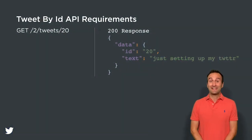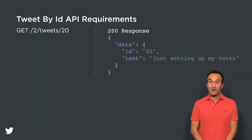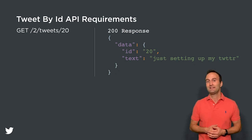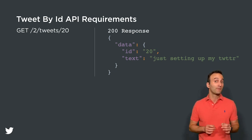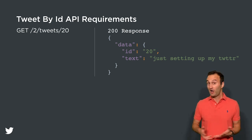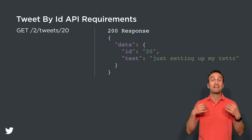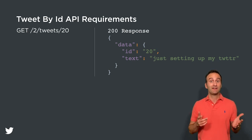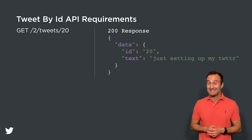We must handle an HTTP GET request to /2/tweets that contains a single tweet ID in the path. If the request is ill-formed, return a 400 Bad Request. Otherwise, return an HTTP 200 JSON response containing a single tweet with its default ID and text fields.